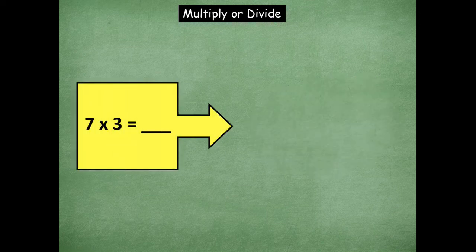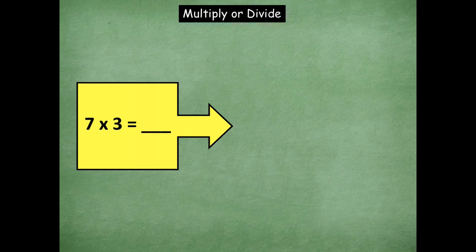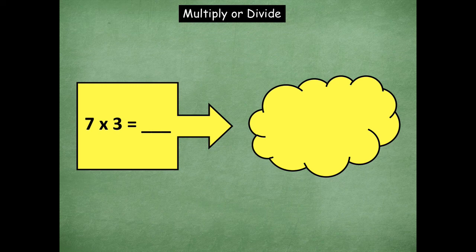Okay. 7 times 3. Skip count by those 7s, friends. So 7 times 3 is 21. 7, 14, 21. Awesome.